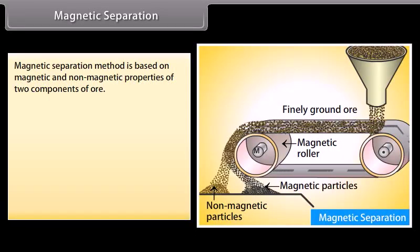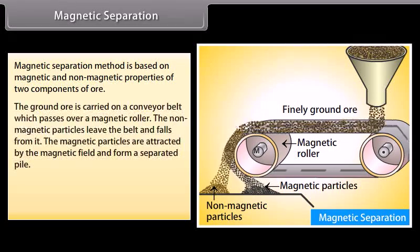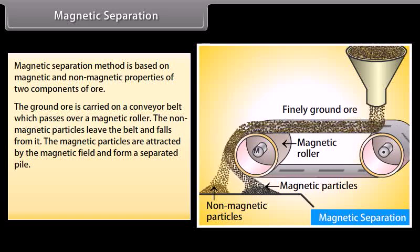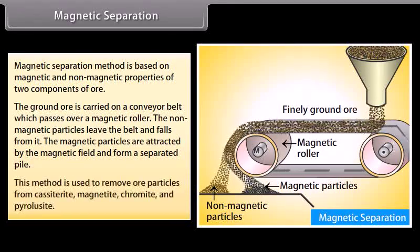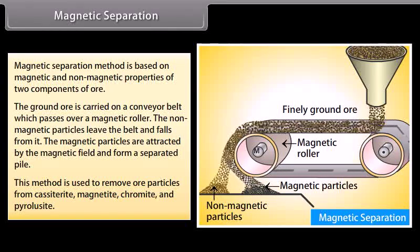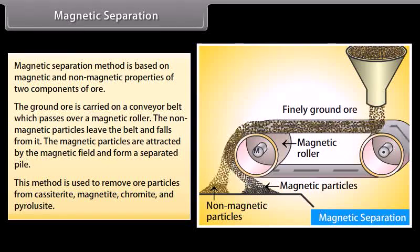Magnetic separation. Magnetic separation method is based on magnetic and non-magnetic properties of two components of ore. The ground ore is carried on a conveyor belt which passes over a magnetic roller. The non-magnetic particles leave the belt and fall off from it. The magnetic particles are attracted by the magnetic field and form a separated pile. This method is used to remove ore particles from cassiterite, magnetite, chromite, and pyrolusite.